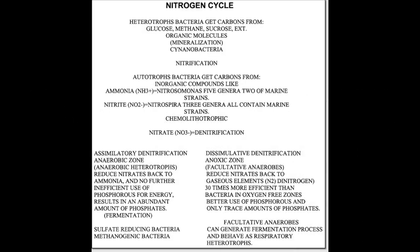If you look at the chart, which I've shown before in other videos, it shows you the complete nitrogen cycle of how it really works. If it's not working proficiently, then you will end up with a byproduct of nitrates, which we all know. We're all told that if you have nitrates, you're going to have to either do water changes to get rid of it, or you're going to have to use plants to get rid of it. But we know this is not 100% accurate.